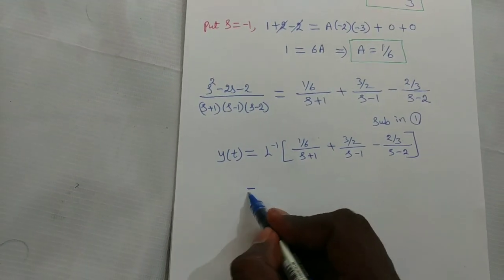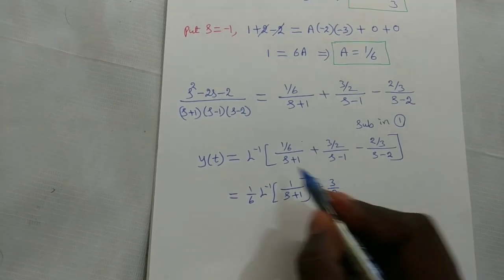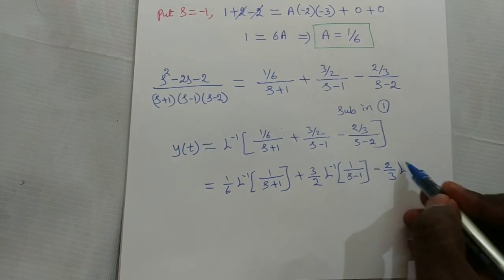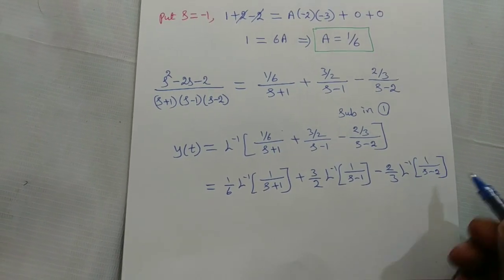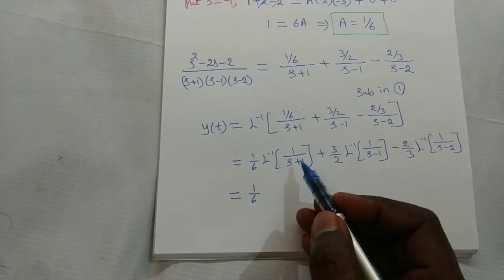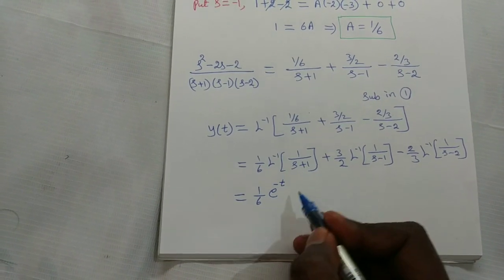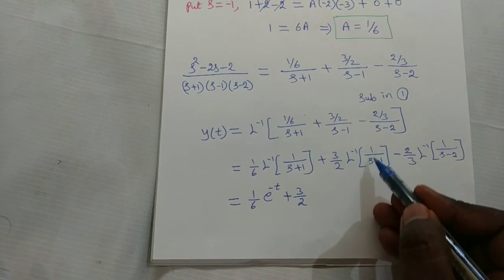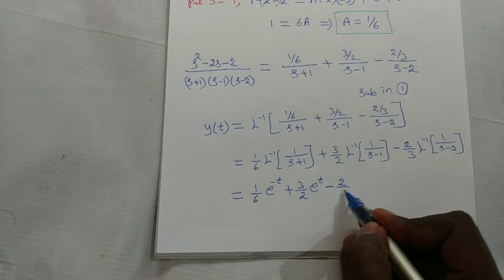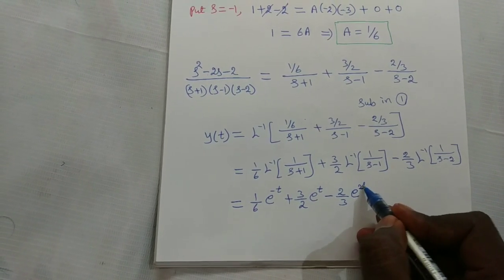Taking constants outside and applying the inverse Laplace transform formula L⁻¹{1/(s+a)} = e^(−at): the first term gives (1/6)·e^(−t) since a = 1. The second term gives (3/2)·e^t since L⁻¹{1/(s−1)} = e^t. The third term gives (2/3)·e^(2t) since a = 2. Therefore the required solution is y(t) = (1/6)e^(−t) + (3/2)e^t − (2/3)e^(2t).